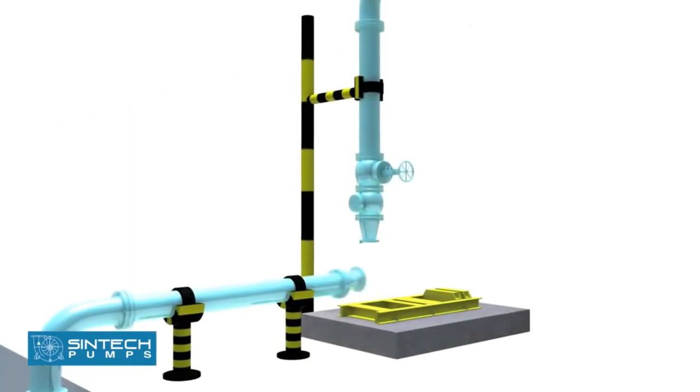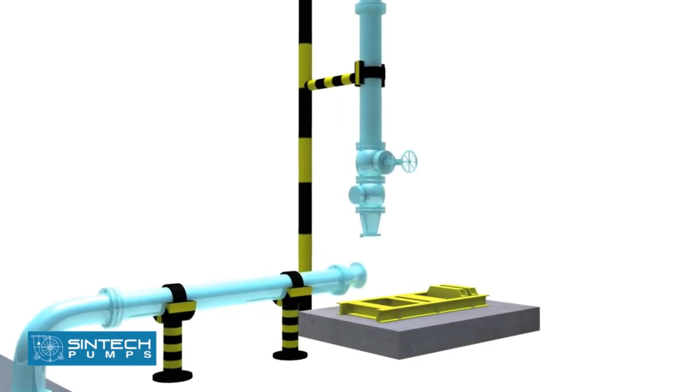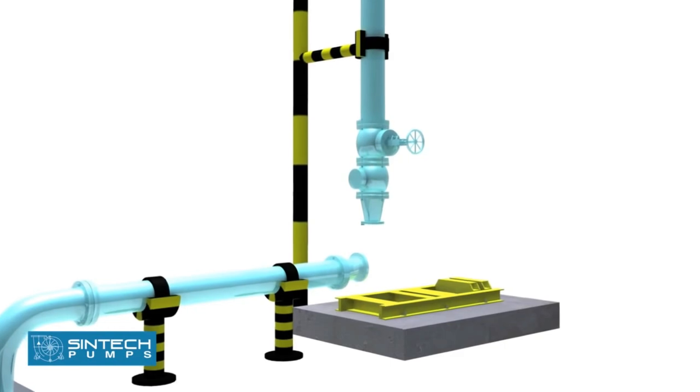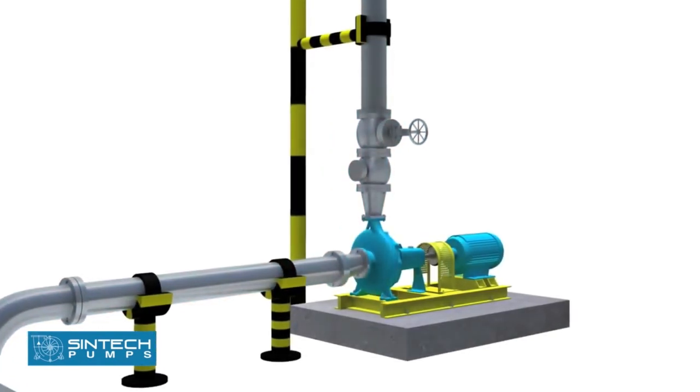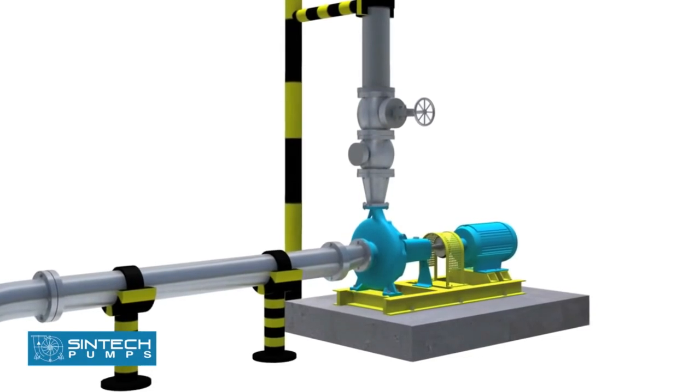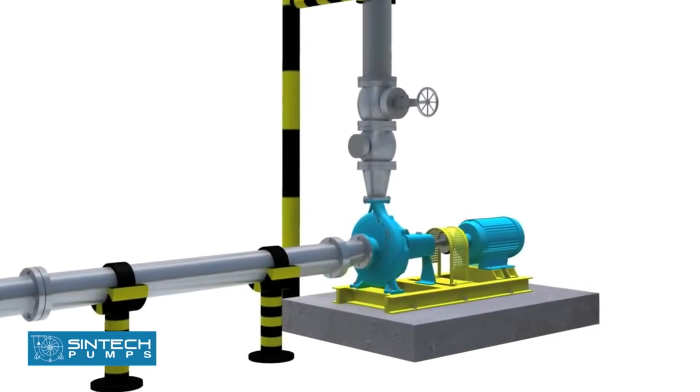Piping associated with the pump must be anchored and supported independently of the pump and should never put any strain on the pump casing. When the pipes are not supported, their weight is borne by the pump casing and may cause them to crack or deflect.